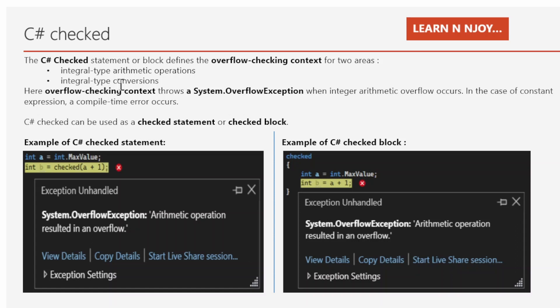C# checked can be used as a checked statement or a checked block. For example, here I have written: int a = int.MaxValue, and then int b = checked(a + 1). Since b cannot hold more than the max value of int, it throws a System.OverflowException. If you do not execute the addition inside a checked context, it won't throw any exception and will give a wrong result.